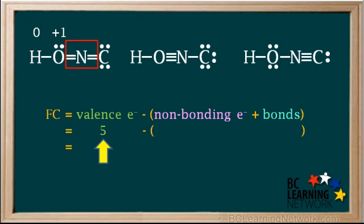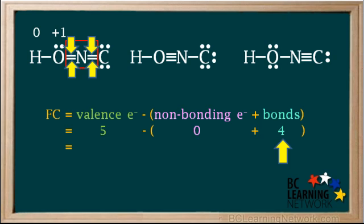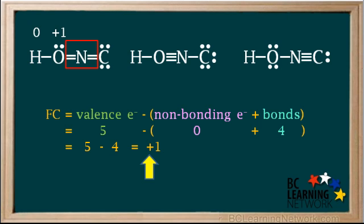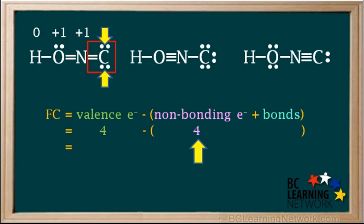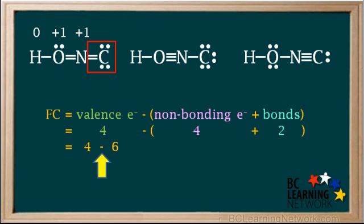Now we'll move on to nitrogen. Nitrogen has five valence electrons. There are no non-bonding electrons around it, and the nitrogen atom has four bonds. Its formal charge is five minus four, which is also equal to positive one. Now we'll find the formal charge on the carbon atom. Carbon has four valence electrons. The atom here has four non-bonding electrons and two bonds. So the formal charge is four minus six, which is equal to negative two, and we write that here above the carbon.